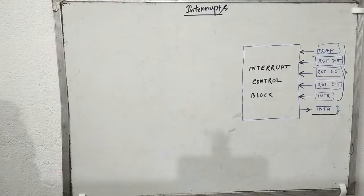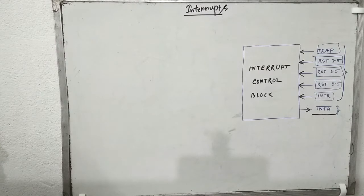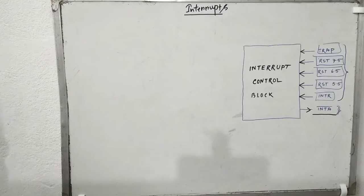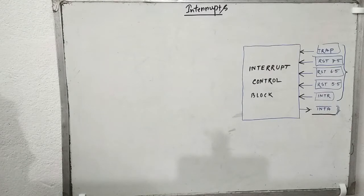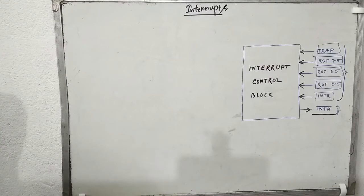In our previous class we have seen three different kinds of interrupts. Out of three, one was discussed and two remained. Now we will discuss the two remaining ones. The first is maskable and non-maskable, and the second is vector and non-vector. Let's first discuss maskable and non-maskable.